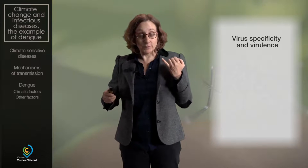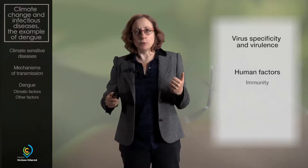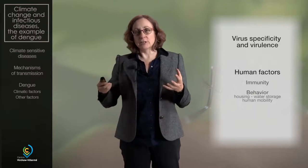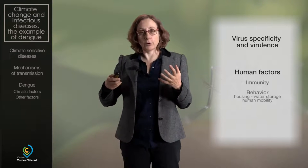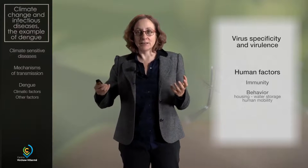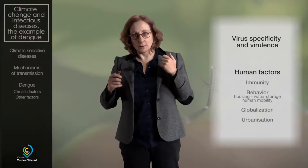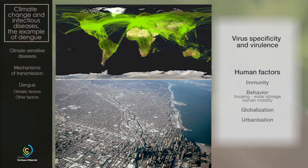Other factors are important for dengue transmission: the virus itself, its virulence, the population's immunity — whether the population has seen the virus before or not — and human behaviour, such as whether water needs to be stored. Water storage can provide a perfect habitat for the mosquito to breed, reproduce, and transmit the disease. Human mobility is also a factor. Two very important factors are urbanization, because it brings a human population into a close area, which is perfect for the Aedes mosquito, and globalization, because it has contributed to spreading the vector and the virus worldwide.